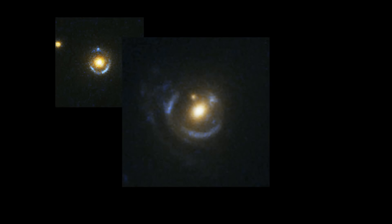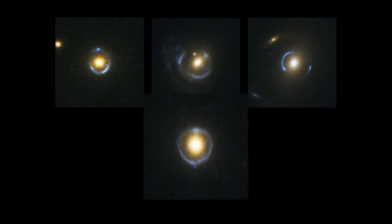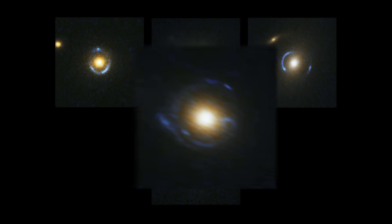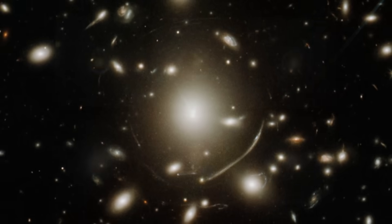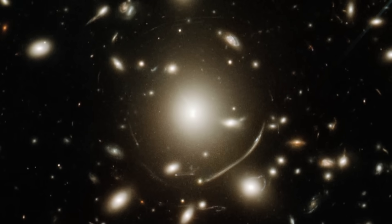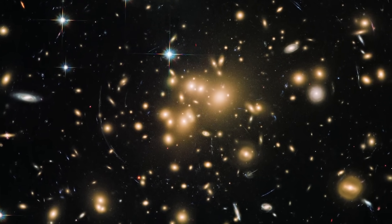Einstein rings and arcs aren't just beautiful, they're powerful scientific tools. They act as natural magnifying glasses, letting astronomers study distant galaxies that would otherwise be too faint or too small to observe. These cosmic lenses help reveal the details of galaxy formation and evolution in the early universe.